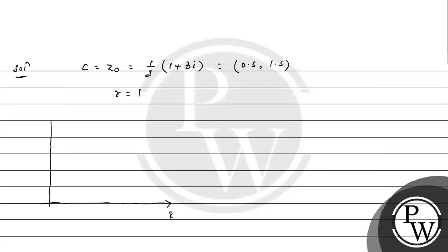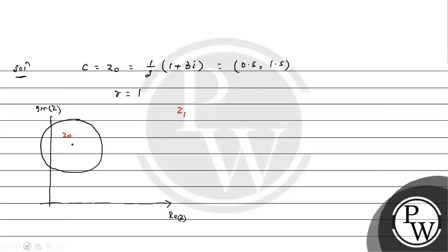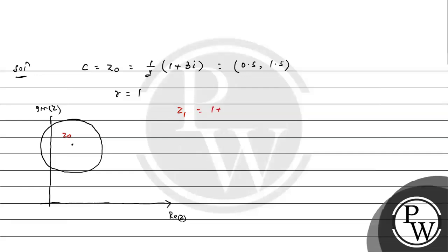We have a circle. This is our real z and this is our imaginary z. We have center as (0.5, 1.5), and 1.5 plus 1 unit. So this is 1.5. This is 1 and 1.